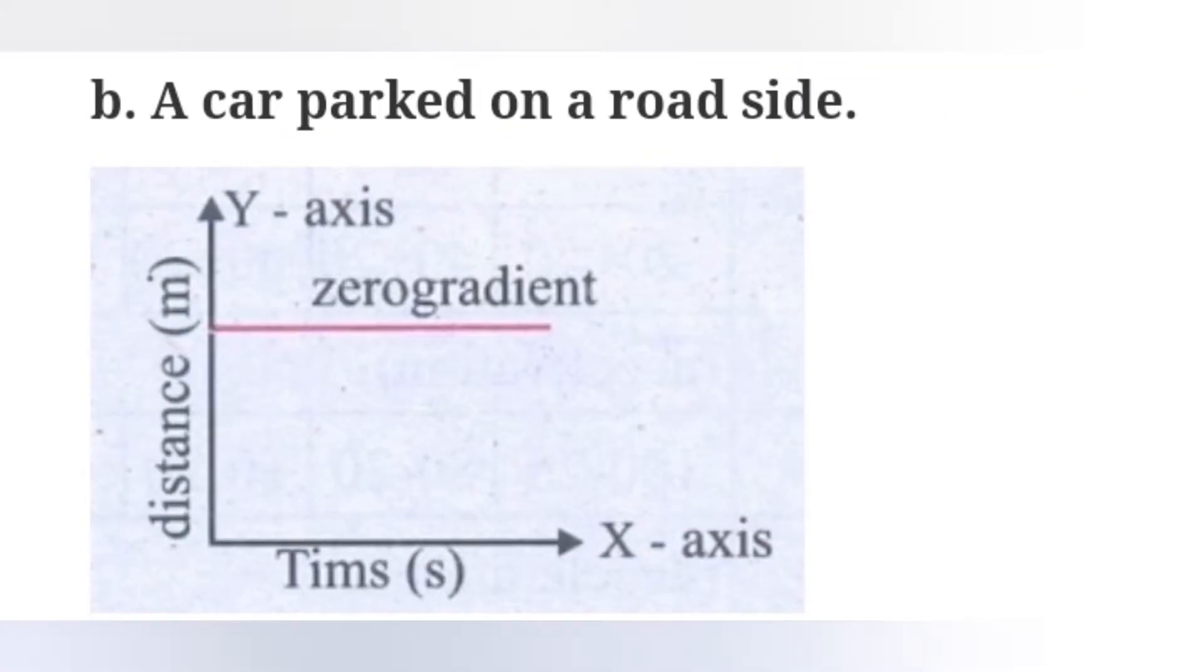Option B: A car parked on roadside. It is in the graph, draw it on your own. Distance, time, zero gradient.